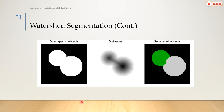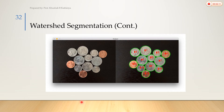Here we have an example of overlapping objects for watershed segmentation — this type of example uses coins. What we need to do is segment multiple touching coins, where the boundaries are connected.